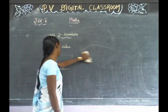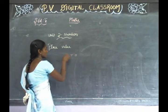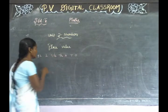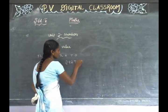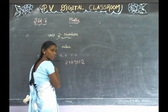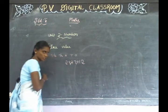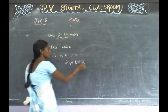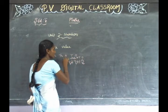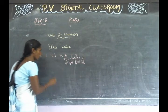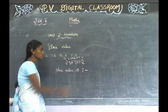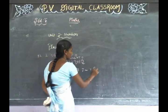Place value. We have ones, tens, hundreds, thousands, ten thousands, lakhs, ten lakhs. For example, place value of seven — seven thousand.